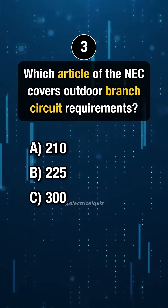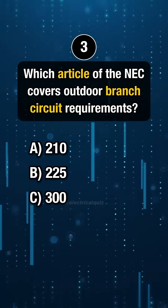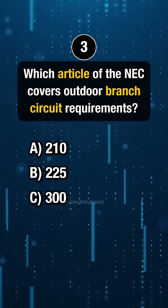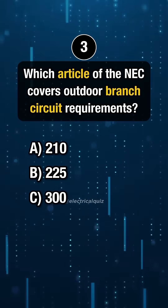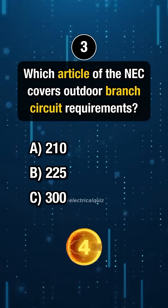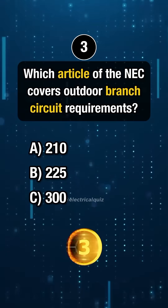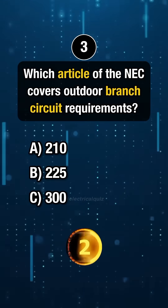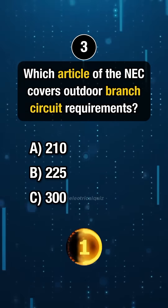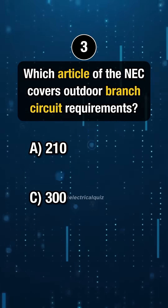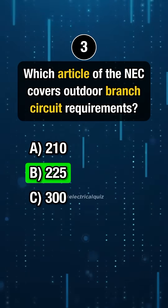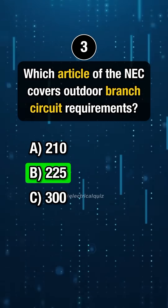Question 3. Which article of the NEC covers outdoor branch circuit requirements? Answer B: 225.